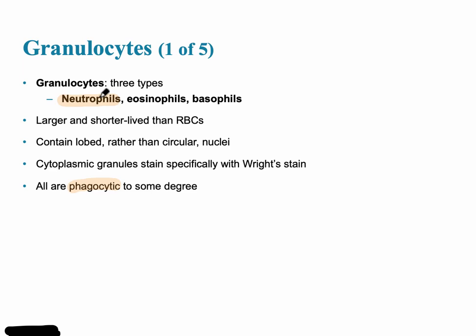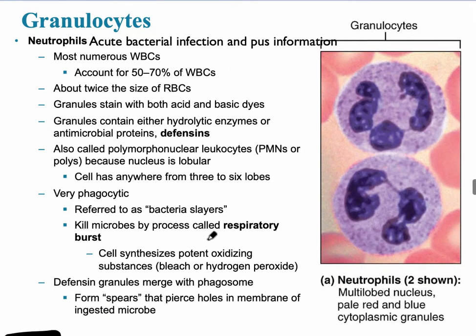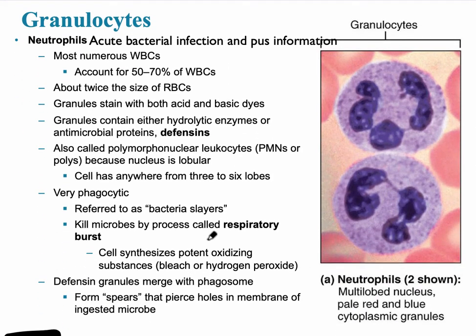The way to think of neutrophils is that they're the first on the scene. If the scene of the crime is a bacterial or microbe invasion, neutrophils are going to be the first ones that show up. When there's an acute bacterial infection or pus inflammation, neutrophils are present. Pus contains neutrophils because they've arrived quickly to the site of bacterial invasion. About 50 to 70 percent of white blood cells are neutrophils.